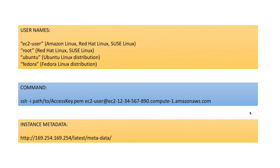So we have understood that we need a virtual server, an AMI for software, and an instance type for hardware. After that we can SSH or RDP into Linux and Windows machines respectively. Let's get started to see everything in action using a demo, and we will cover the remaining concepts as we go through it. See you in the next video, thanks for your time.